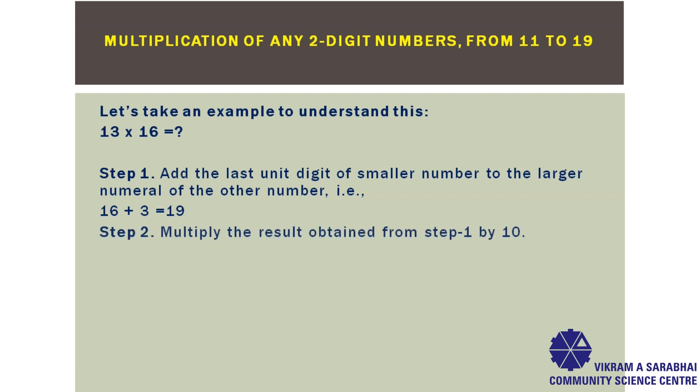In the next step, multiply the result obtained from step 1 by 10. So, from step 1, 19 multiplied by 10, we get 190.